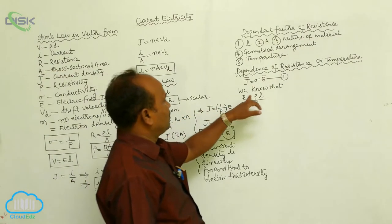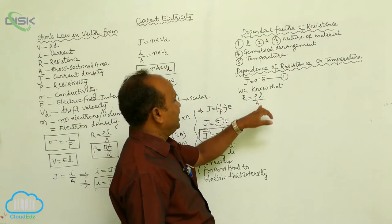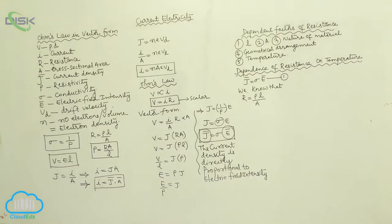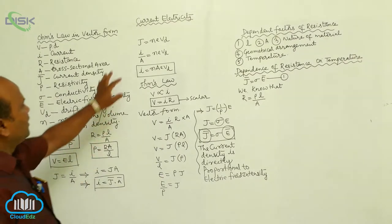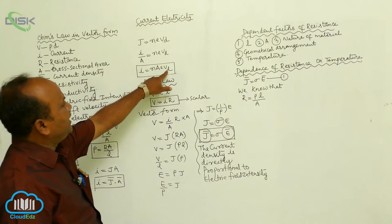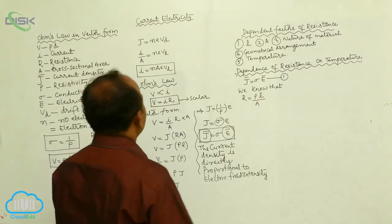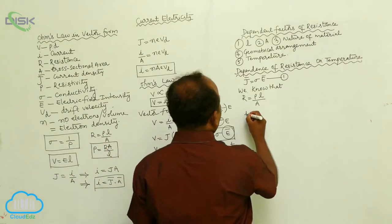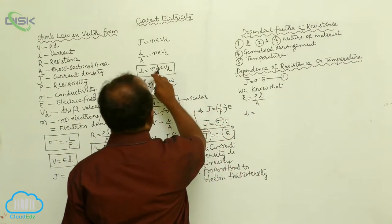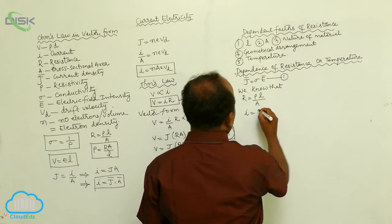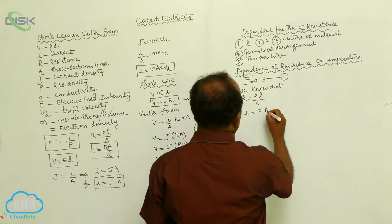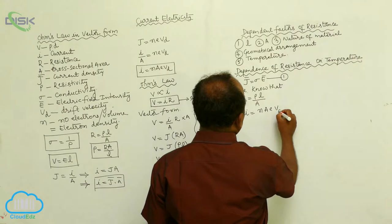R is equals to rho L by A. And there is a formula: I is equals to N A V D. Write the current, I is equals to N A E V D.